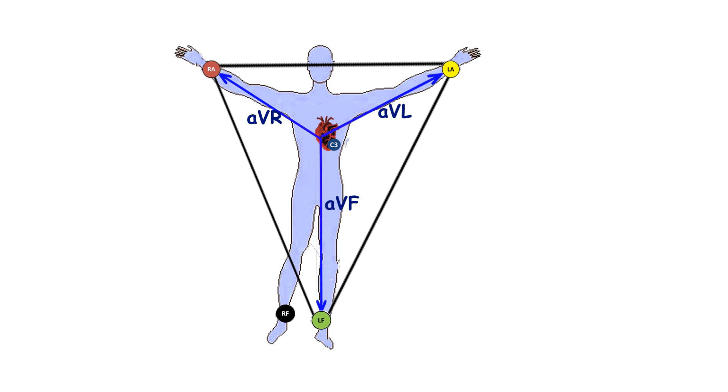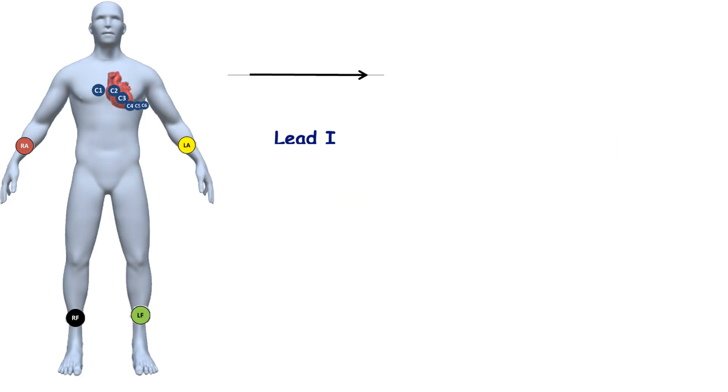Limb and augment leads describe the depolarization and repolarization currents in the frontal plane. Lead 1 forms the vector close to the horizontal line. Lead 2 represents the vector going to the plus 60 degree mark. Lead 3 represents the vector going to the plus 120 degree mark.